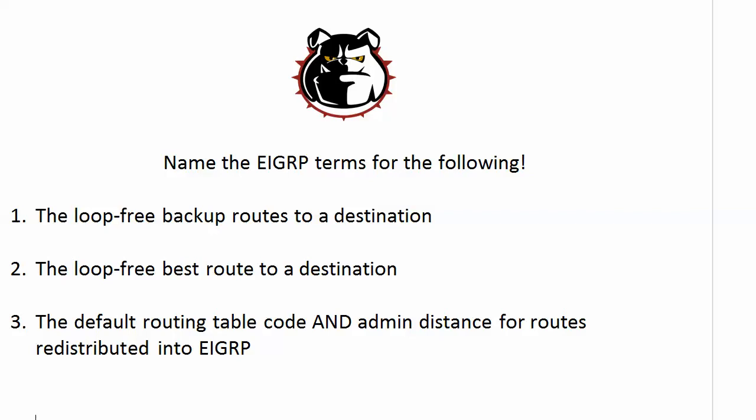Let me hit you with a quick bonus question before we look at the live equipment: what command will show you both the successor and feasible successor routes at one time? Because if you do 'show IP route' or 'show IP route EIGRP,' that's not going to do it — that's just going to show you the successor routes. What you want to do is look at the topology table with the 'show IP EIGRP topology' command, and that will show you your feasible successors and your successors for all of your routes.